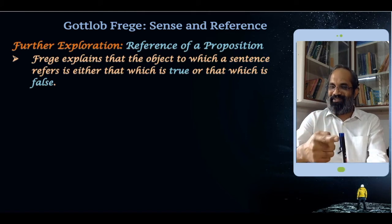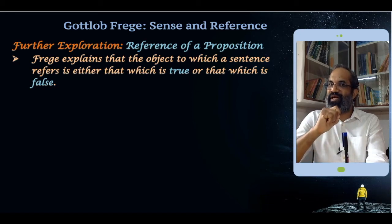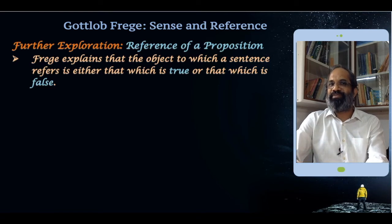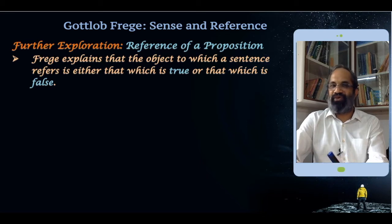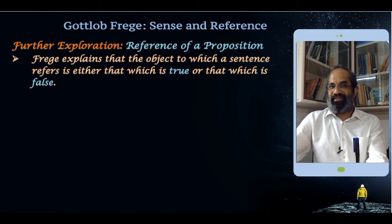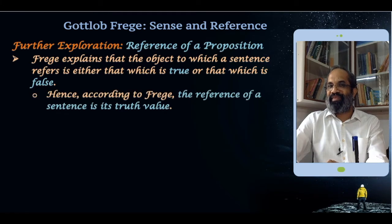The pen has a reference, and 'blue colored' has a reference. But when I say 'the pen is blue colored,' what is the reference? For Frege, he explains that the object to which the sentence refers is either that which is true or that which is false. According to Frege, the reference of a sentence is its truth value.